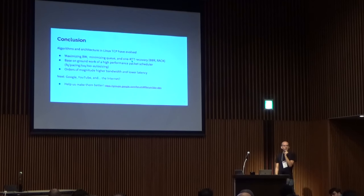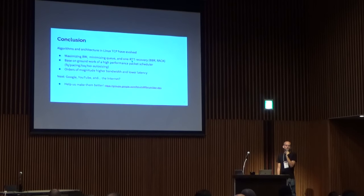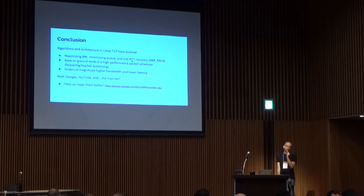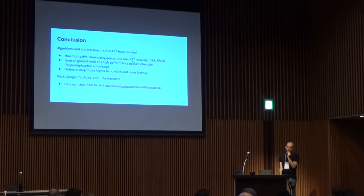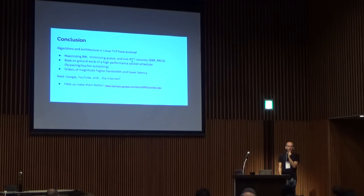Coming back to the question about FQ CoDel: if you didn't have anything smart on your client host and had a low number of flows, it sounds like you might be able to get most of the benefit of FQ CoDel in terms of reducing queue latency with something like this — if you're a client, not an intermediate router. Exactly — clients or servers doing a lot of sending should be able to benefit. One way to think about it: if you don't have FQ CoDel in the path, BBR does a nice job of keeping the bottleneck queue short, even without active queue management.